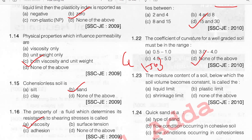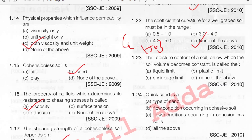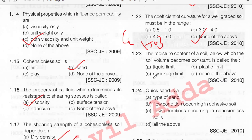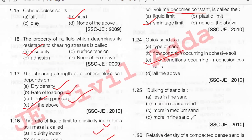The moisture content of soil below which the soil volume becomes constant — shrinkage limit. Bulking of sand is more in fine sand. Option D.